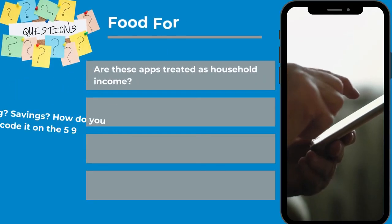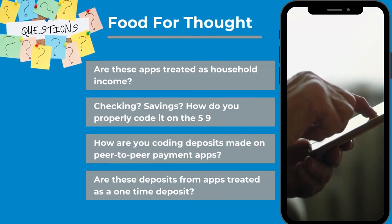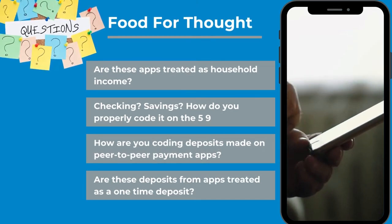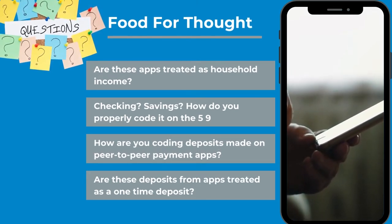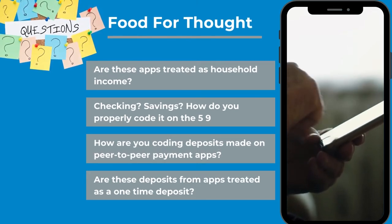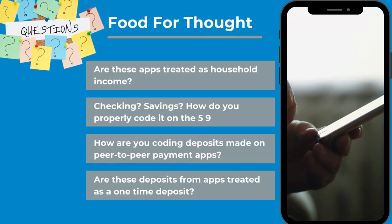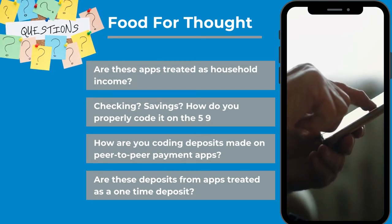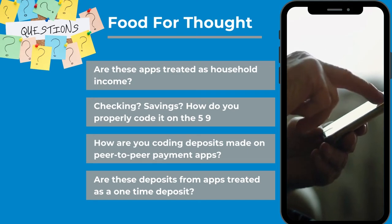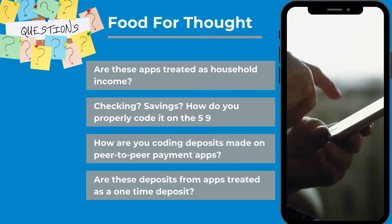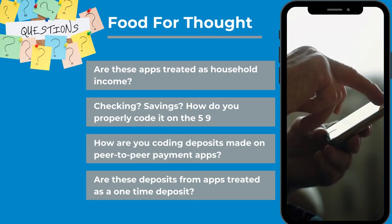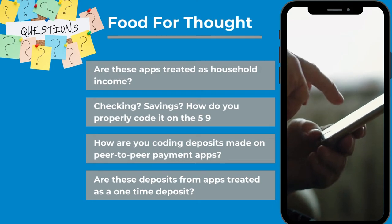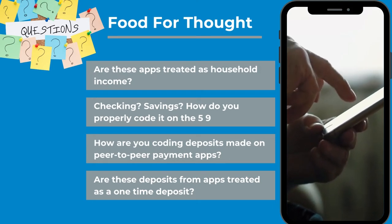Are these peer-to-peer apps treated as household assets? If so, which asset? Will it be mirrored — the savings or the checking? How are you coding it on the 5-9? How are you coding the deposits made from the app?